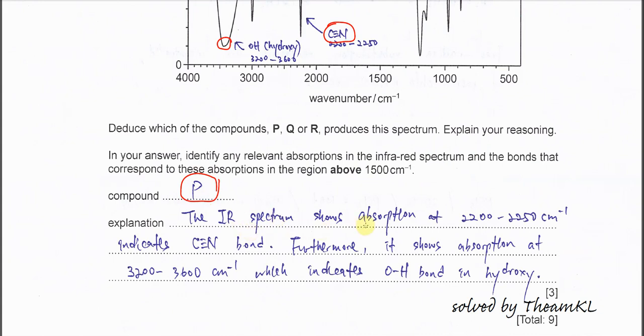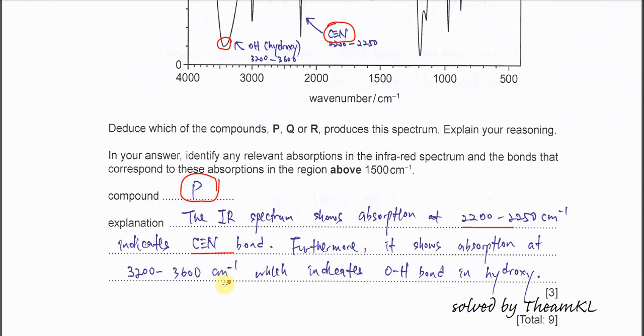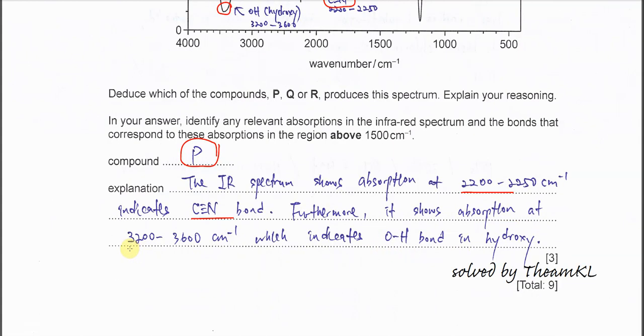The IR spectrum shows absorptions at 2200 to 2250, indicates there is a nitrile or CN triple bond. Furthermore, it shows absorptions at 3200 to 3600 wave number or per cm, which indicates OH bond in hydroxide.